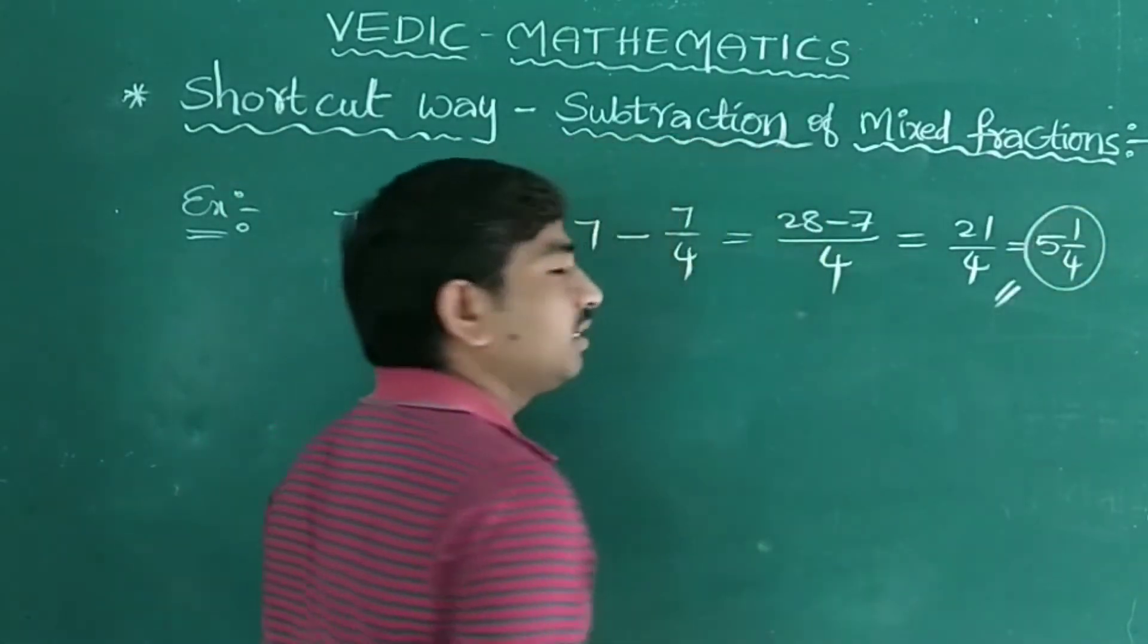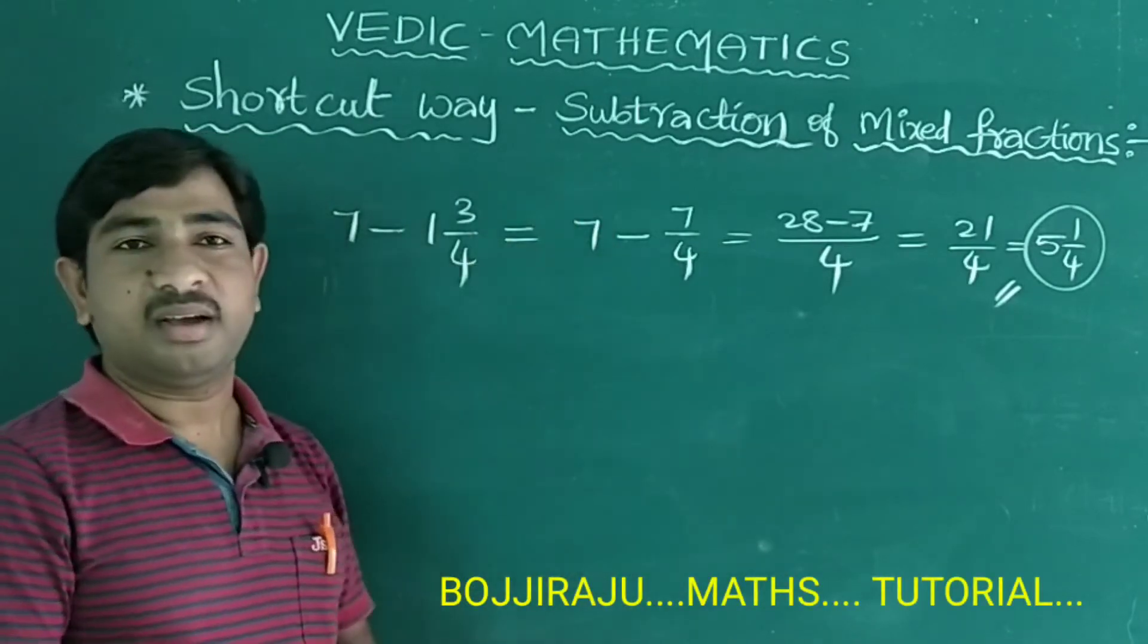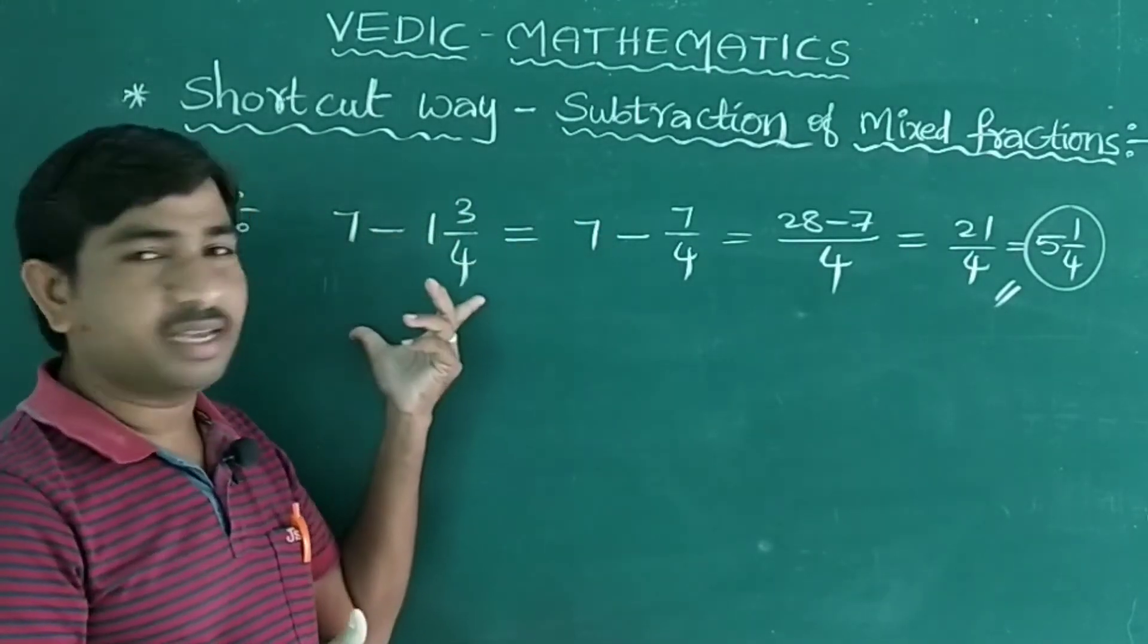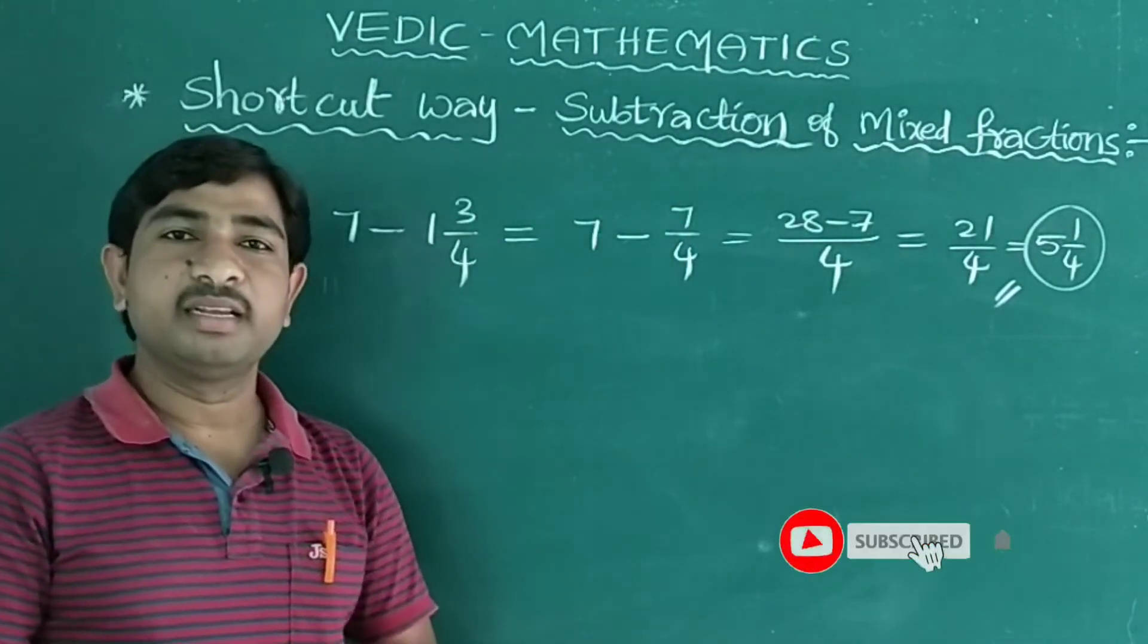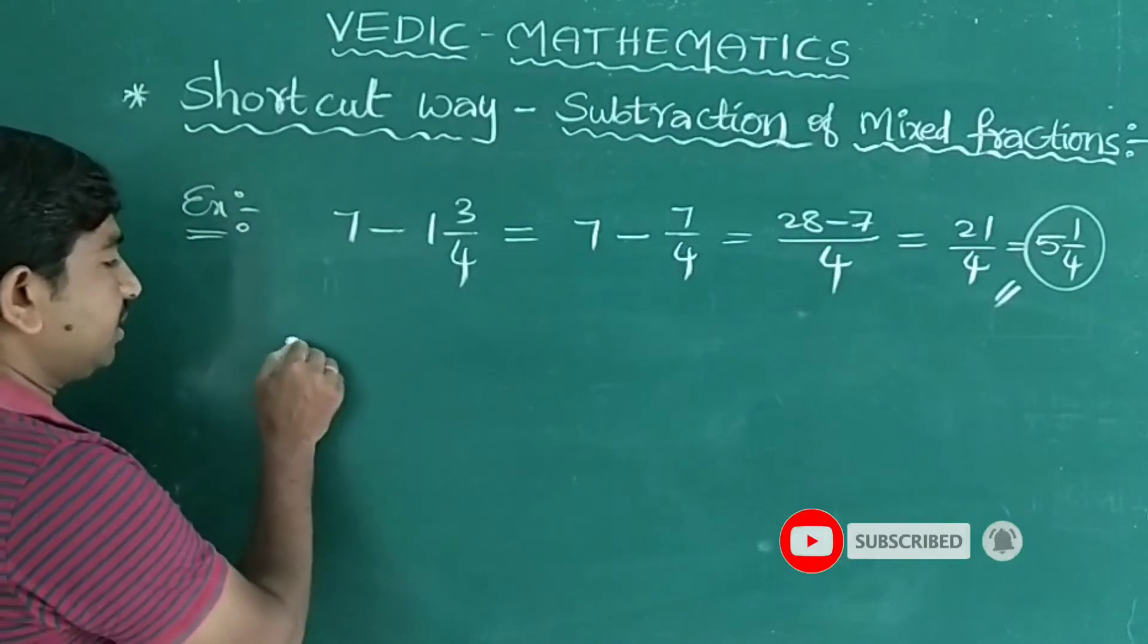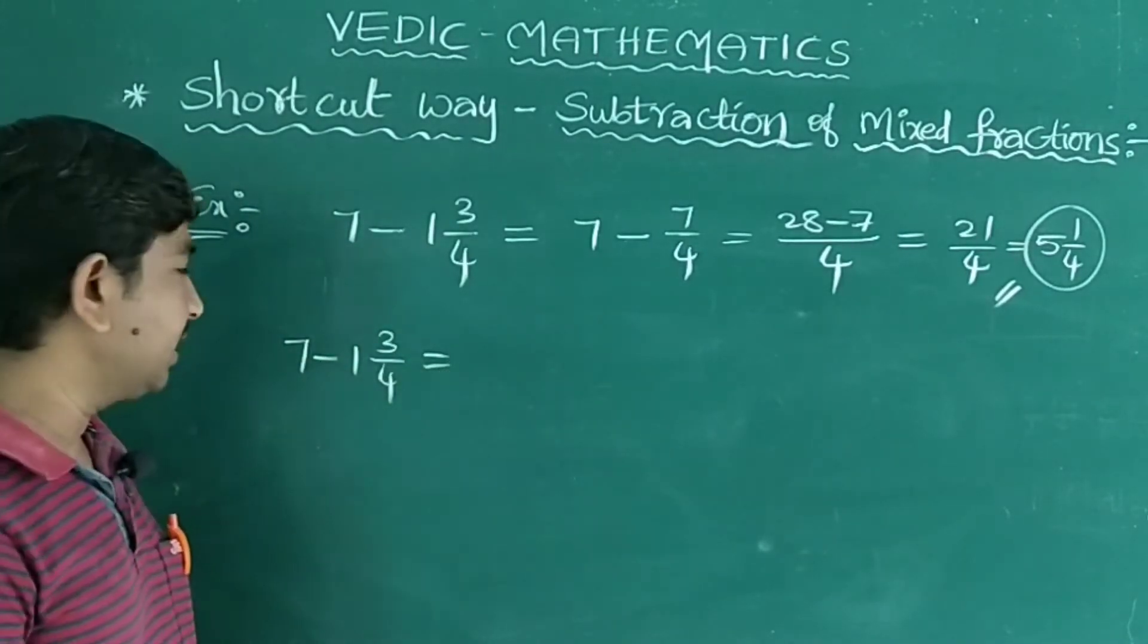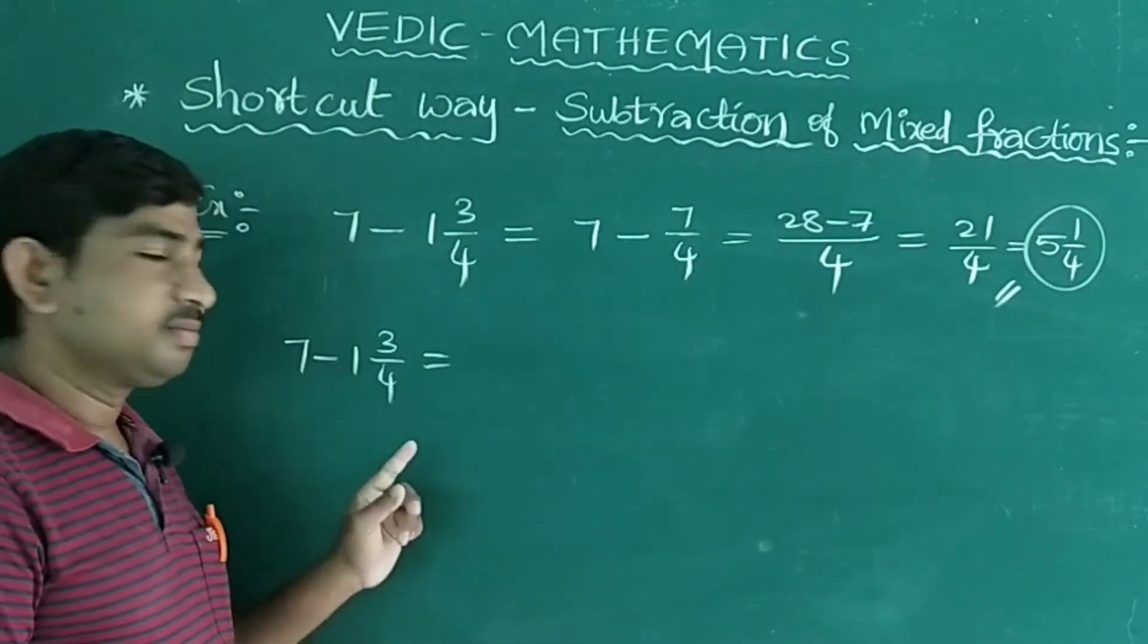So how you will get, this is the long process to get that answer. In this video I am explaining a shortcut trick, how to find the subtraction of mixed fractions in fractions of seconds. So 7 minus 1 3/4. Observe the base denominator here. What is the denominator? 4.